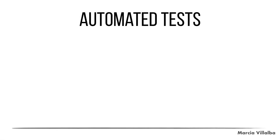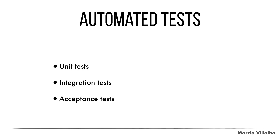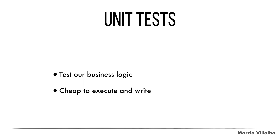We have different types of automated tests. The three most common are unit tests, integration tests, and acceptance tests. Unit tests test the smallest unit of our code — usually functions or methods — and they focus on the business logic and what the code is doing. They are very cheap to execute and write. Usually unit tests run without internet, not connecting to any database, just running very fast in your local environment and you can run them many times.